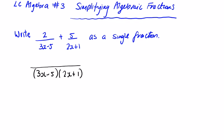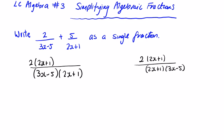We cross multiply 2 by what's not over 2x plus 1. If we have 2 by (2x plus 1) over (2x plus 1)(3x minus 5), you can see that the reason we're not changing anything is that these would cancel, just leaving 2 over 3x minus 5, which is what we have at the beginning. So you haven't changed the 2 over 3x minus 5 so far.